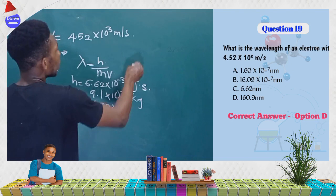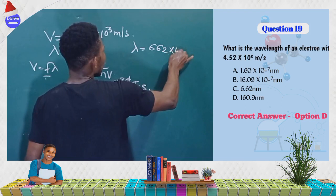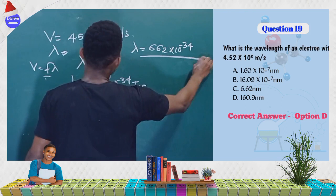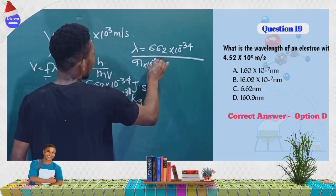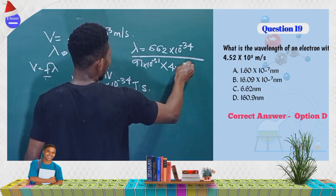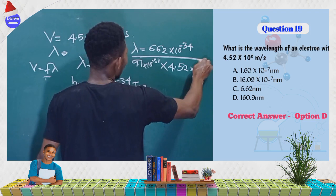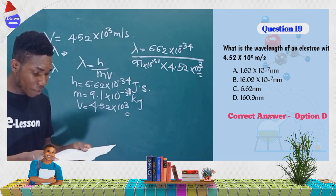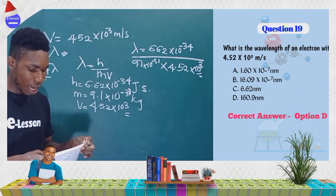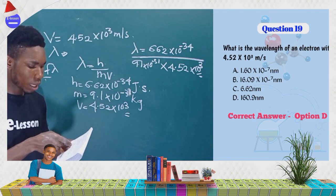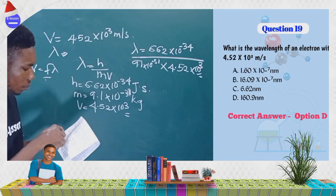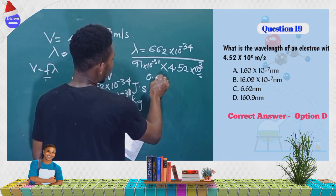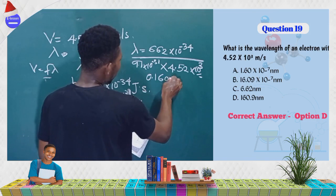Substituting into the equation: λ = (6.62 × 10⁻³⁴) / (9.1 × 10⁻³¹ × 4.52 × 10³). When you simplify this using a calculator, you get approximately 0.1609 × 10⁻⁷.